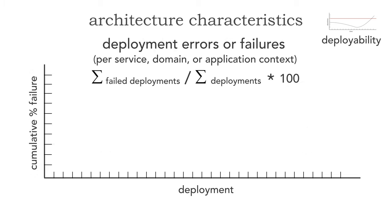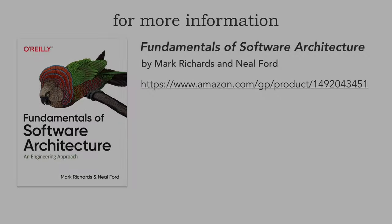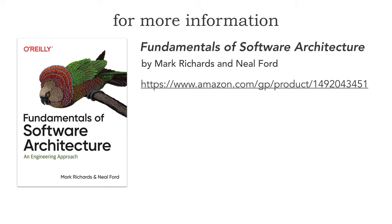For deployment errors, I take the number of failed deployments divided by the total number of deployments and multiply by 100 to get a cumulative percentage. As you'll notice in this graph, things are starting to get worse — notice the upward trend.